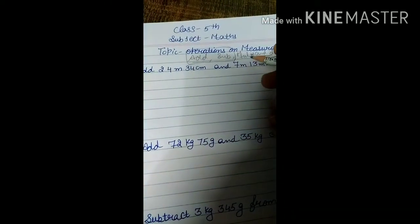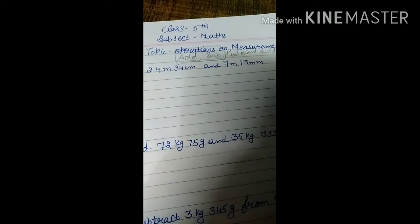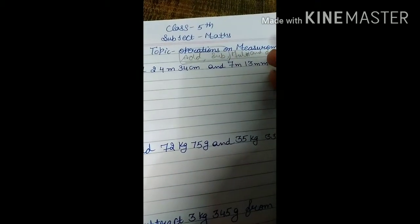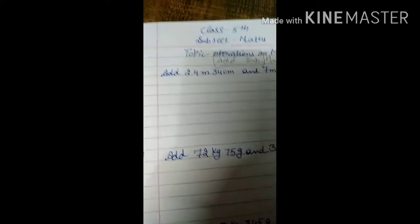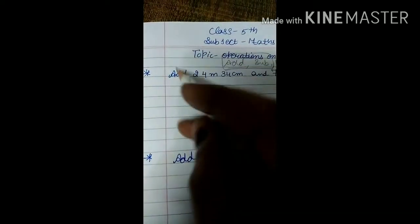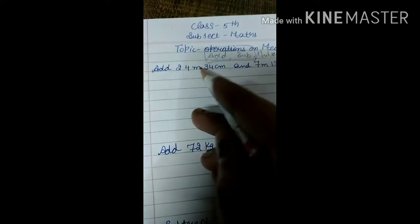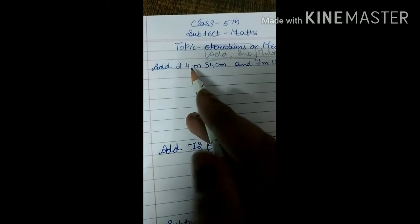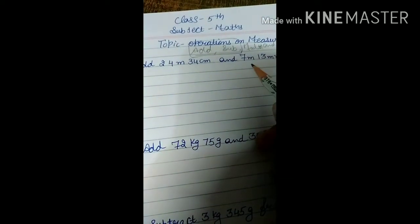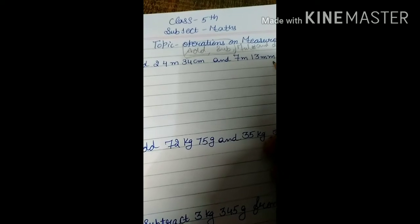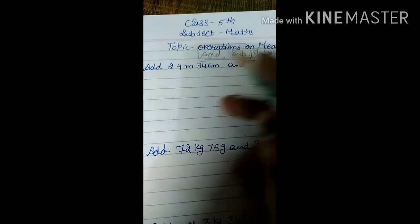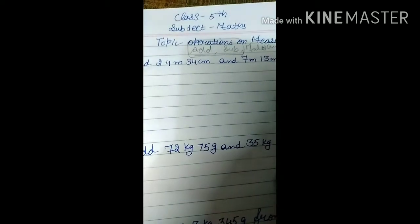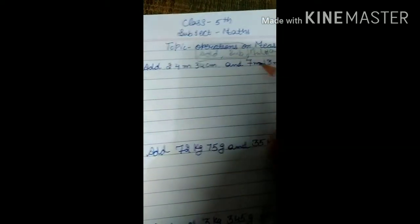Today we will discuss only addition and subtraction. Multiplication and division will be covered in our upcoming lecture. Here we have to add two numbers: one is 24 meters and 34 centimeters, and the other is 7 meters and 13 millimeters. First of all, you have to check which is the biggest unit.